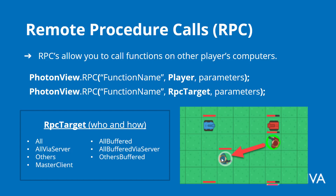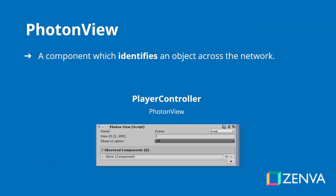So you've got All Buffered, All Buffered Via Server, and Others Buffered. That's pretty much the gist of RPCs. We'll get into those in more detail when we start actually using them, but for now this is just a brief overview of what they do and how we are going to use them in the project — and we are going to use them quite a lot. So let's move on to our next concept, which is the Photon View.